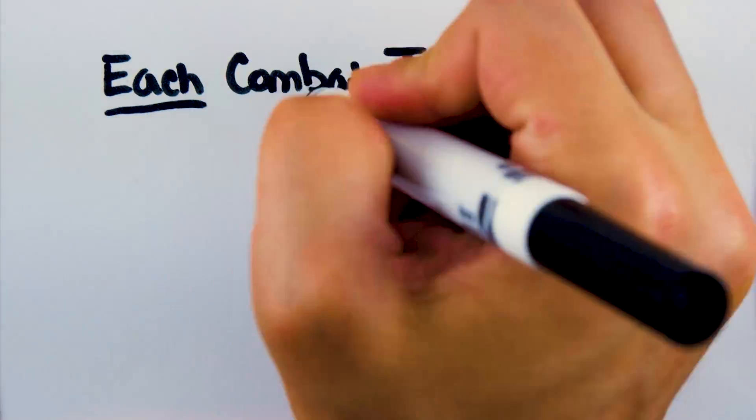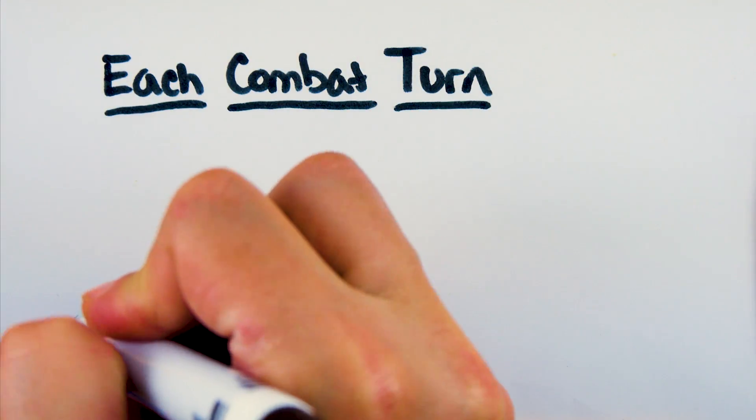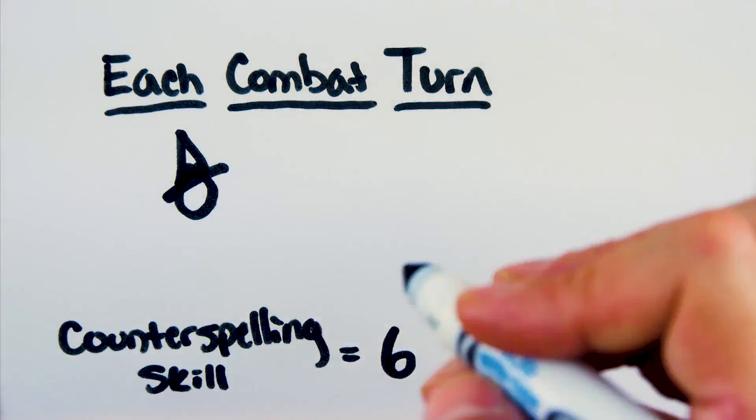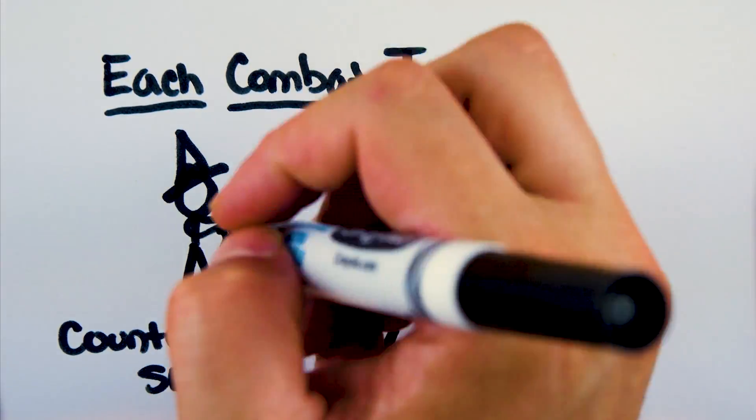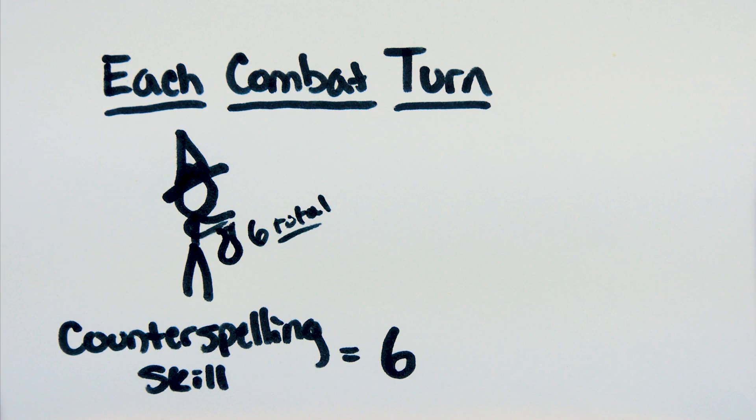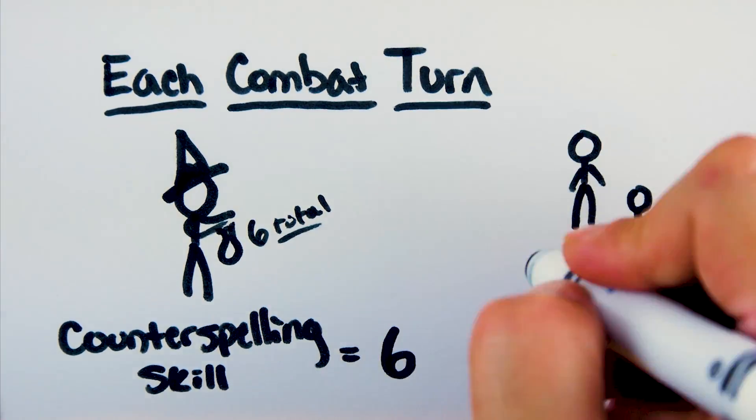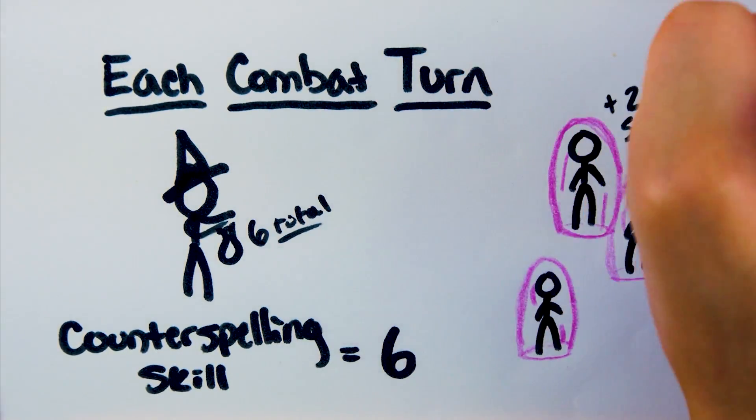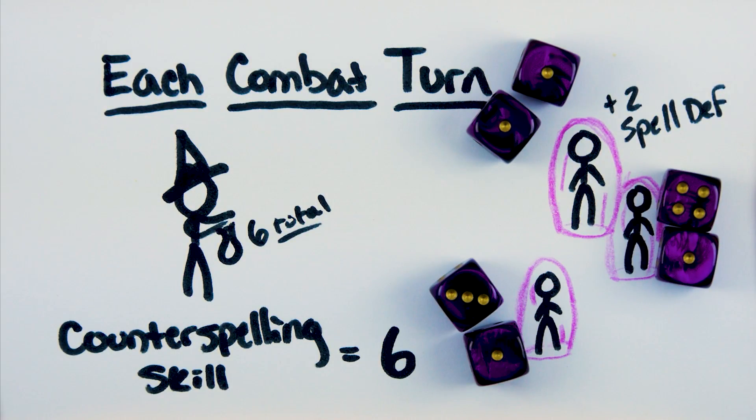Each full combat turn, you have a pool of dice that you can use for spell defense that is equal to your counterspelling skill rating. When a spell is cast, you can choose to use some or all of your counterspelling dice to defend against the incoming enemy spell. These dice are added to the defense pool of all the people you designated to protect, including yourself. The pool refreshes at the beginning of each combat turn.